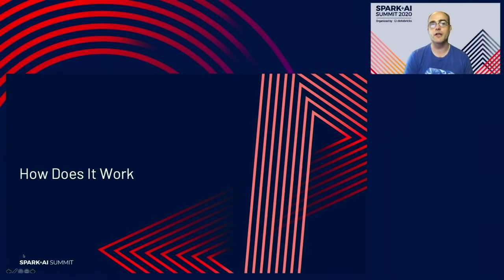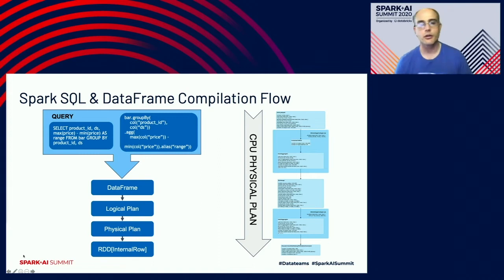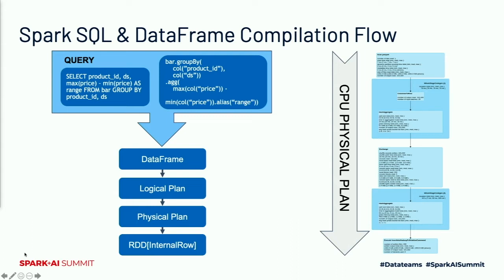How does it work? How do we actually make all of this happen? Inside Spark there's the framework called Catalyst, as Jason talked about. In Catalyst, you either take SQL input through a SQL parser that gets turned into a DataFrame object, or if you're using the DataFrame API directly, you're building up the same abstract syntax tree. As soon as you say go — a collect, a write, or anything that stops lazy evaluation — Catalyst starts compiling and optimizing. It takes the DataFrame, turns it into a logical plan, applies several optimizations, turns it into a physical plan, applies more optimizations, and finally turns it into an RDD of internal row.